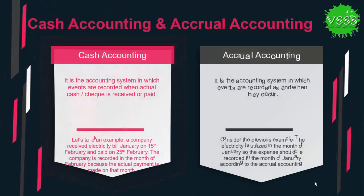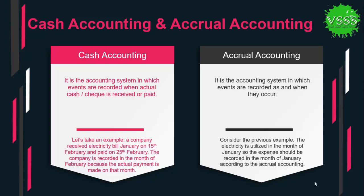Our first point for today's class is the difference between cash accounting and accrual accounting. Cash accounting is the accounting system in which events are recorded when actual cash or a check is received or paid. For example, a company received an electricity bill for the month of January on 12th February and paid it on 25th February. The company records this bill in the month of February because the actual payment is made in February.